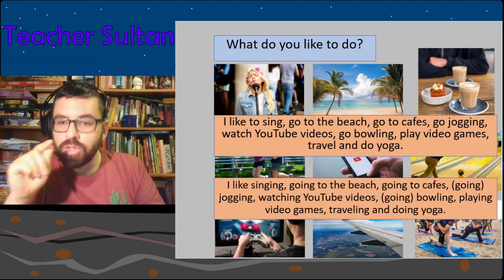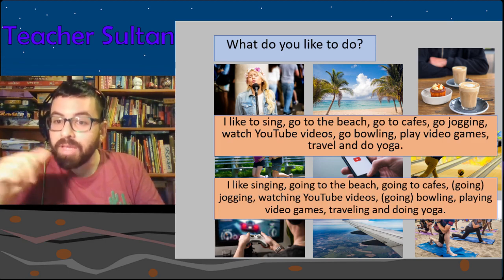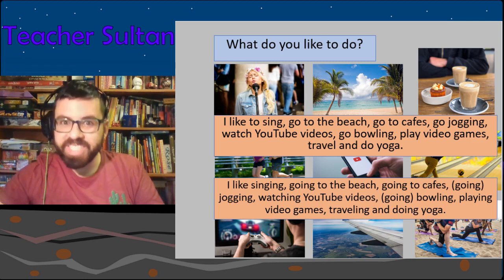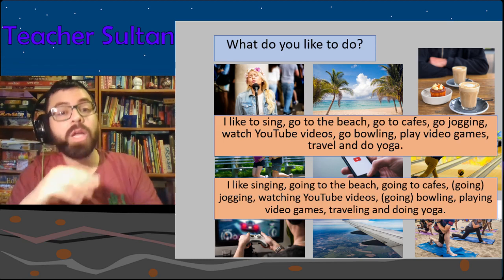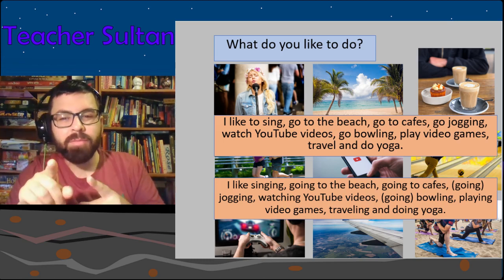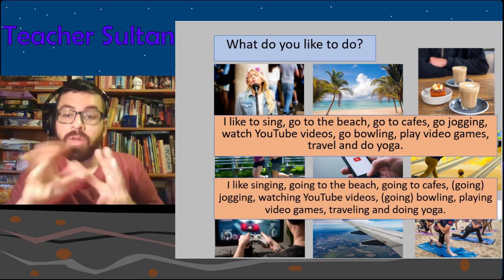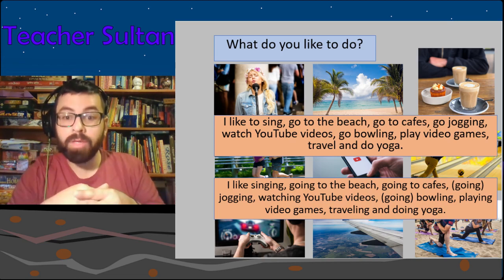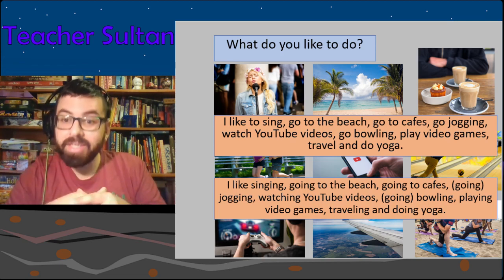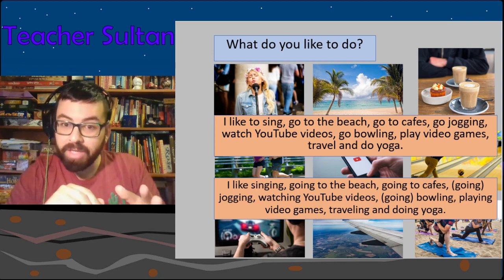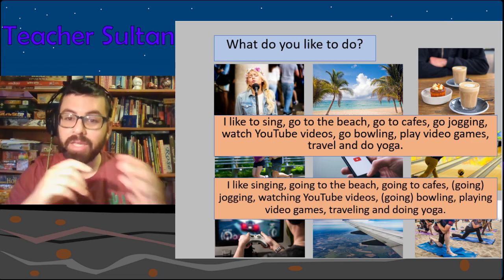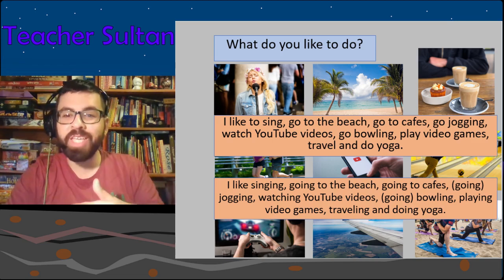Go jogging, watch YouTube videos, go bowling, play video games, travel and do yoga. Or you can keep them all in the -ing form. For example: 'I like singing, going to the beach, going to cafes, going jogging, watching YouTube videos, going bowling, playing video games, traveling and doing yoga.'